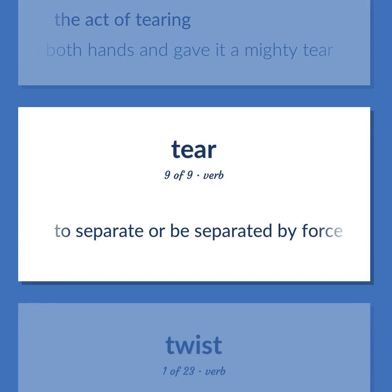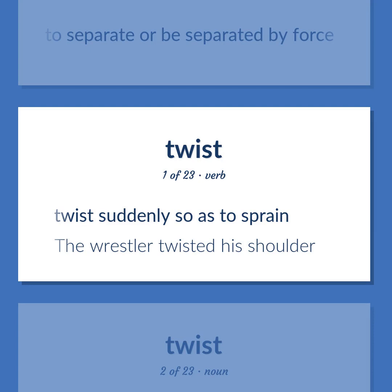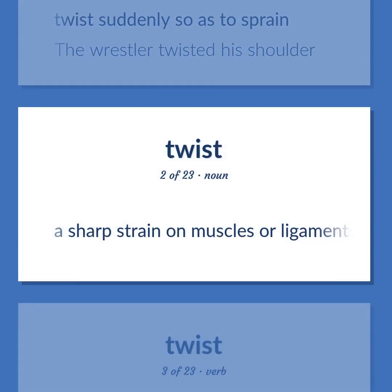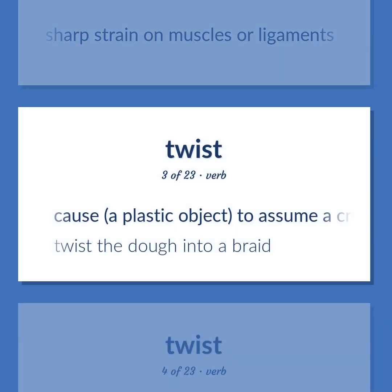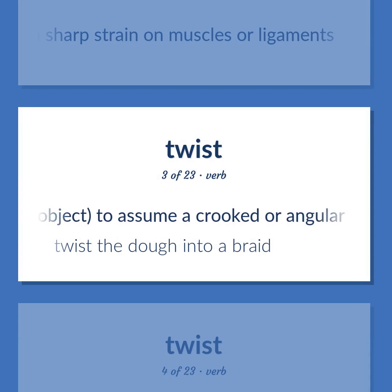Twist: to twist suddenly so as to sprain — 'the wrestler twisted his shoulder.' Also, a sharp strain on muscles or ligaments. Also, to cause a plastic object to assume a crooked or angular form — 'twist the dough into a braid.'